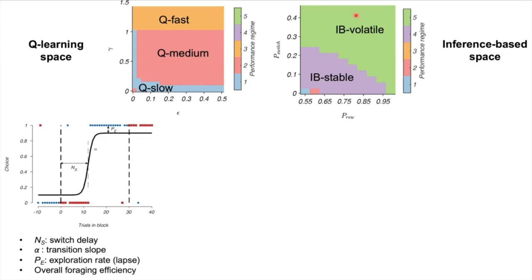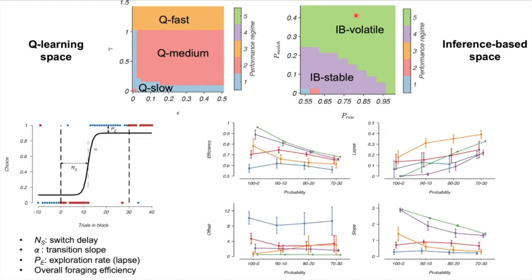As shown in the plot below, Q-learning agents — classes 1, 2, and 3 — tend to be less efficient with higher lapse rates, while inference-based agents — classes 4 and 5 — were able to switch faster with sharper transitions.